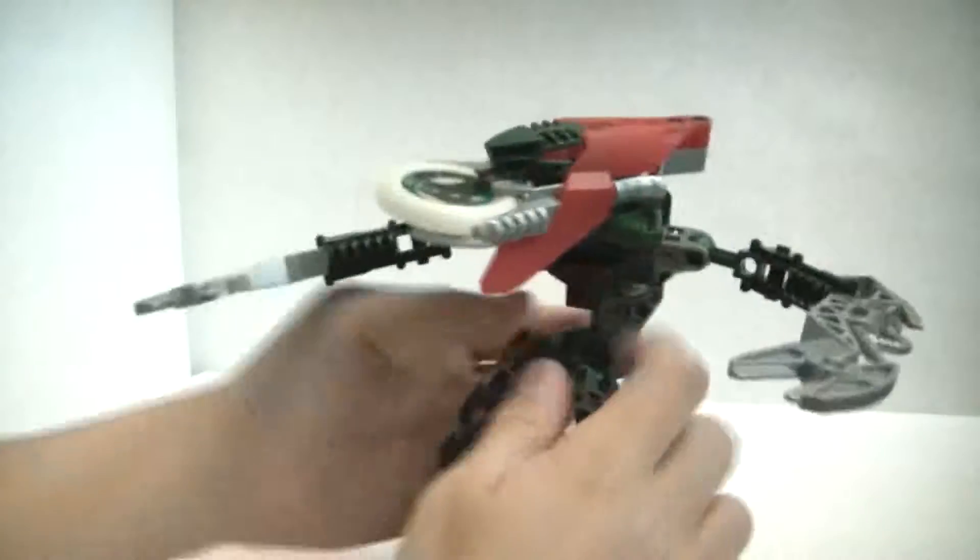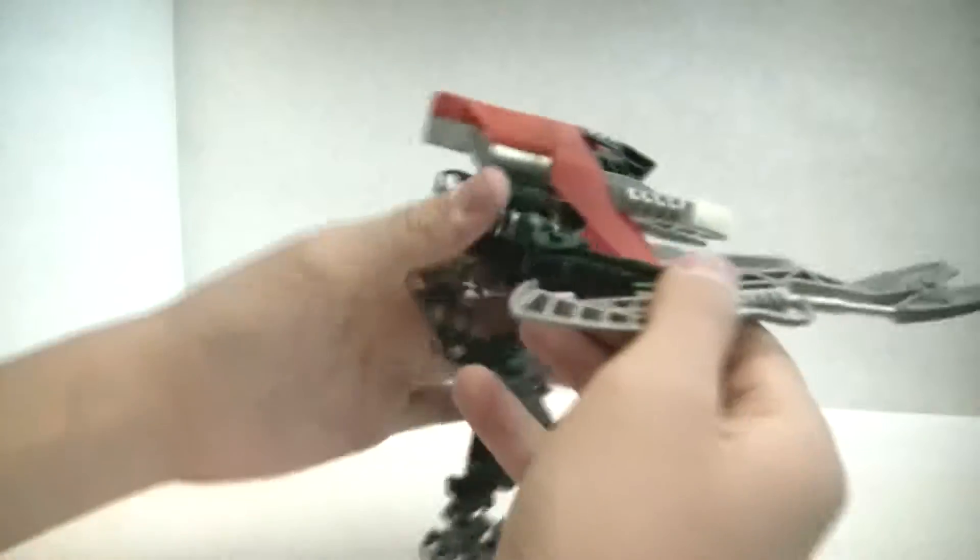Those are his legs, and then his arms are very simple. Just that one piece with the scissor piece.